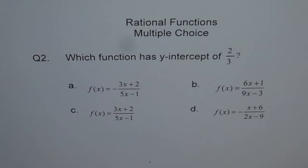a. f of x equals to minus of 3x plus 2 divided by 5x minus 1. b. f of x equals to 6x plus 1 divided by 9x minus 3. c. f of x equals to 3x plus 2 divided by 5x minus 1. d. f of x equals to minus x plus 6 divided by 2x minus 9.